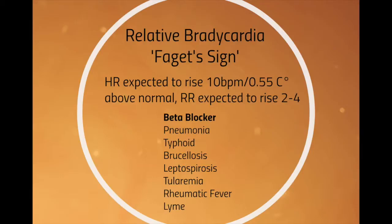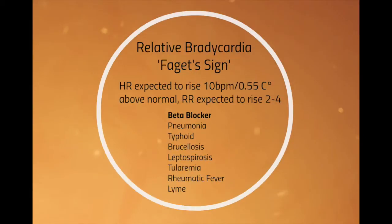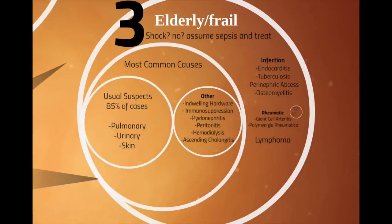Let's break it down for the elderly patient who comes in with fever. Most important thing: are they in shock? If not in shock, we assume sepsis, treat empirically, and look for the source. The source is usually one of three things: urine, chest — like pneumonia — and/or skin and soft tissue infection.